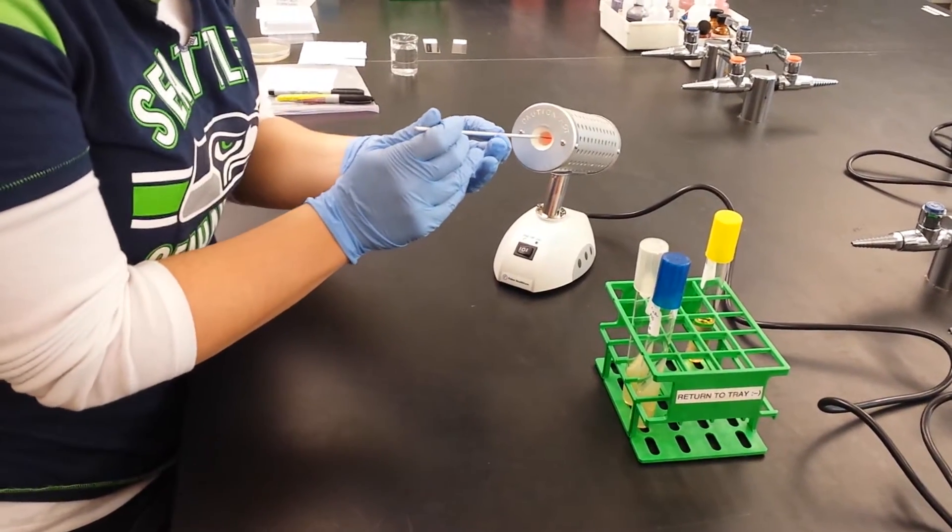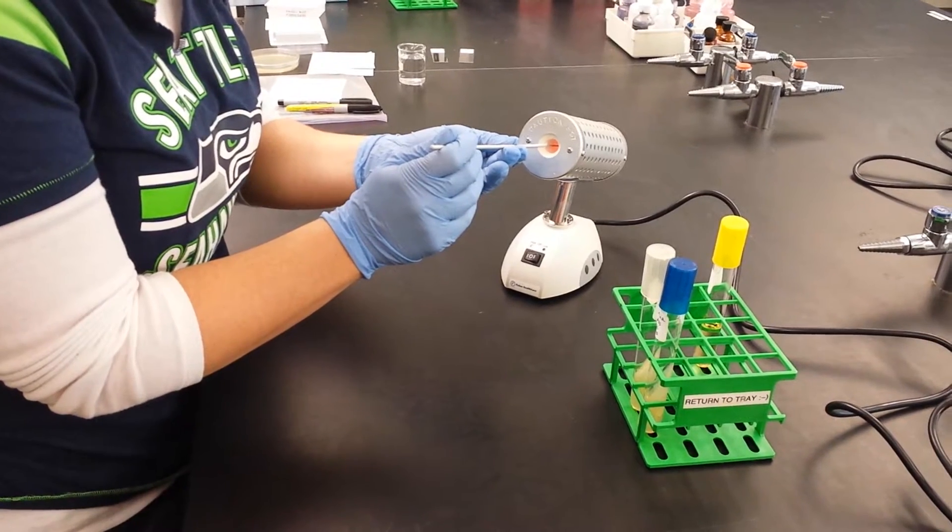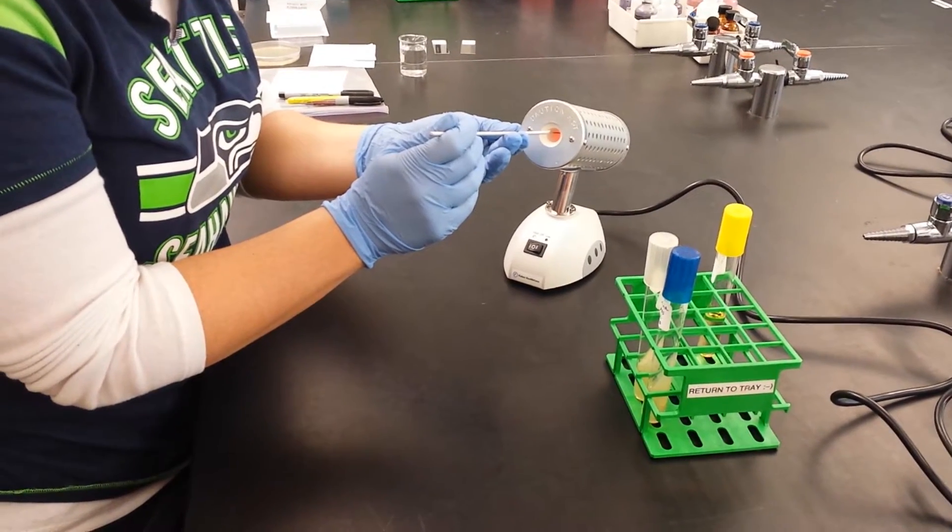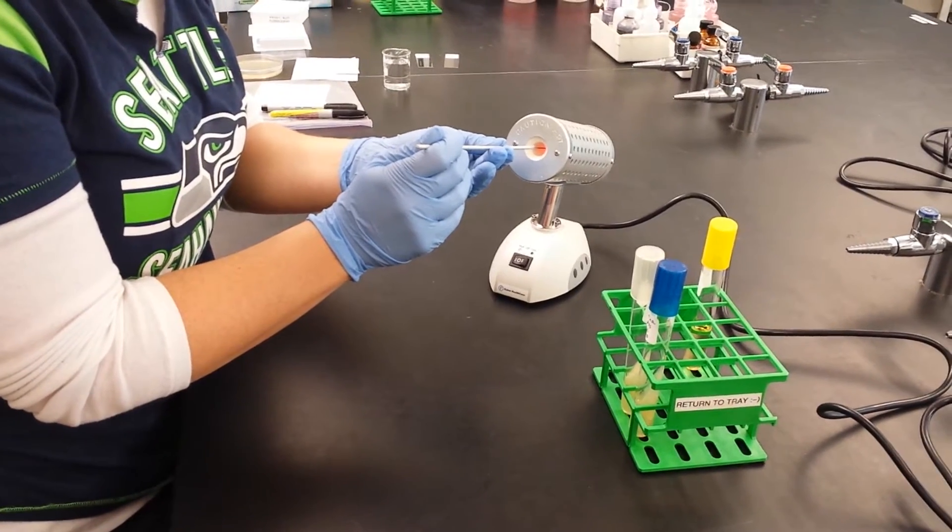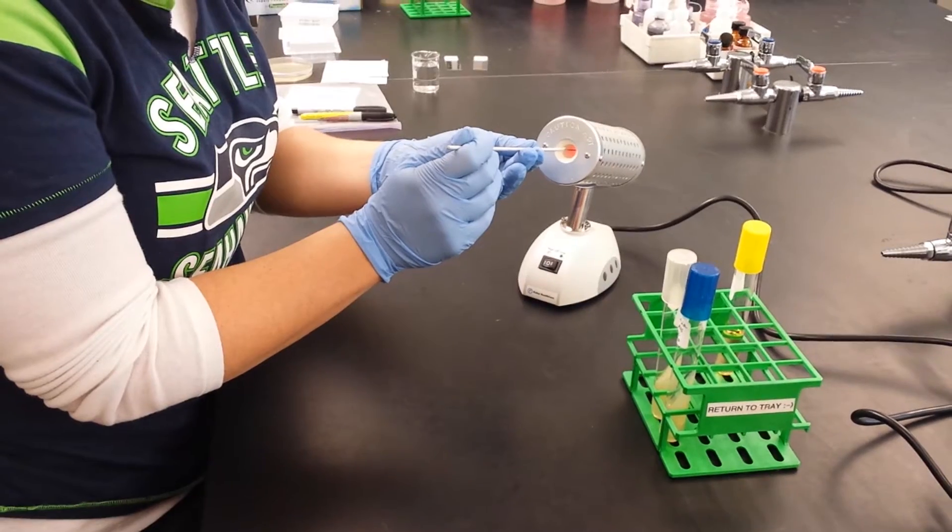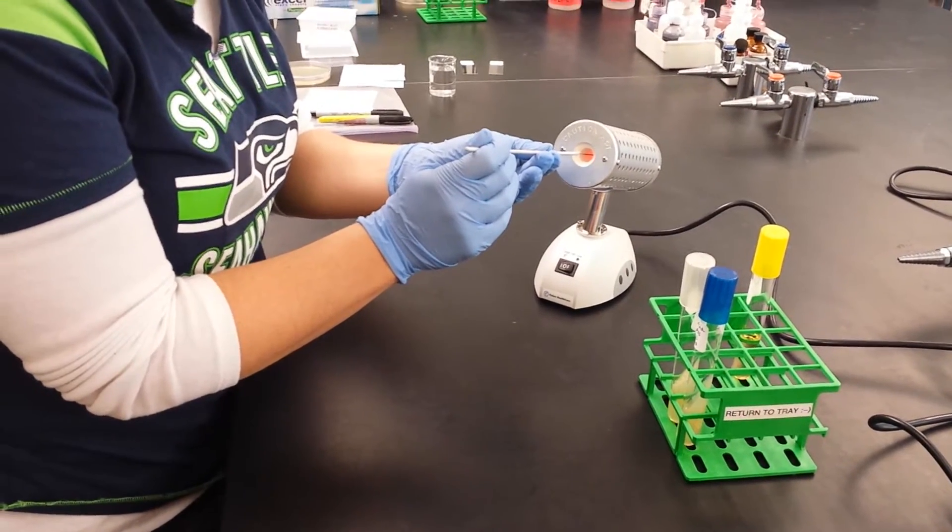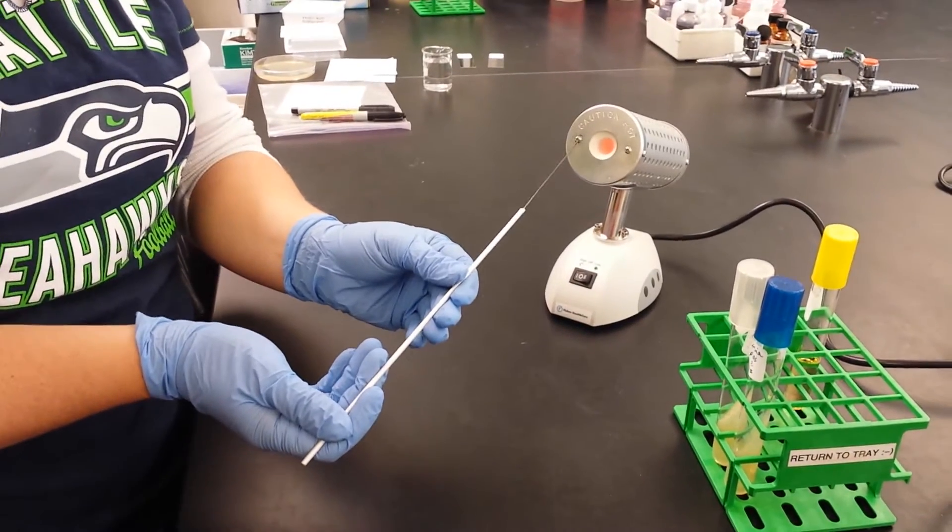is to sterilize your loop in the Bacti loop. So we put it in and count to 10, but slowly. 1001, 1002, 1003, 1004, 1005, 1006, 1007, 1008, 1009, 1010. And that should be long enough to make it red hot and glowing, although the glow goes away right away. Now it's sterile.